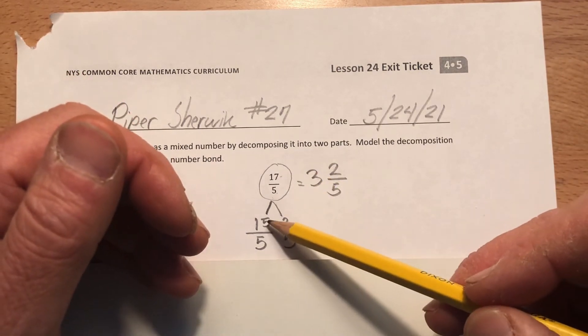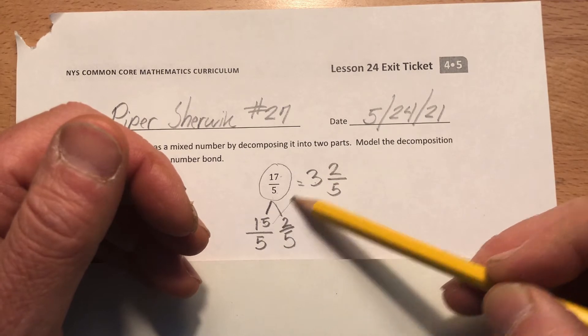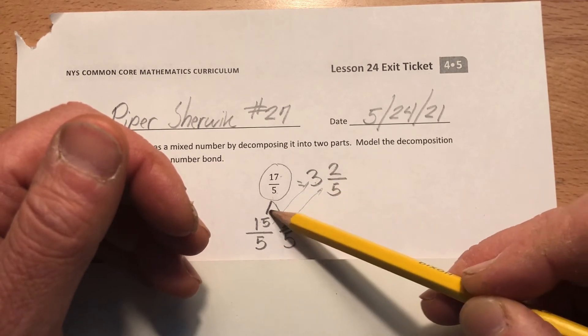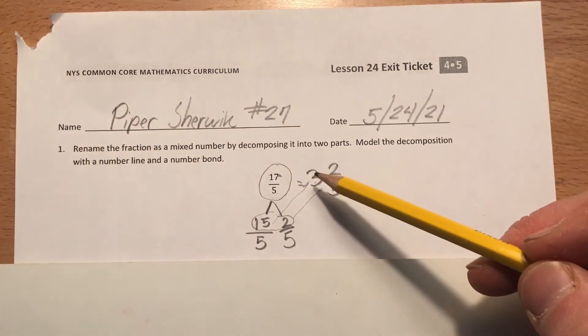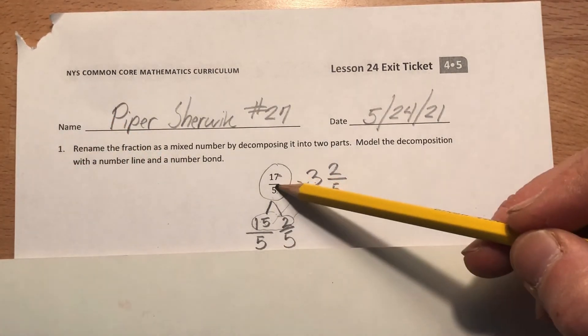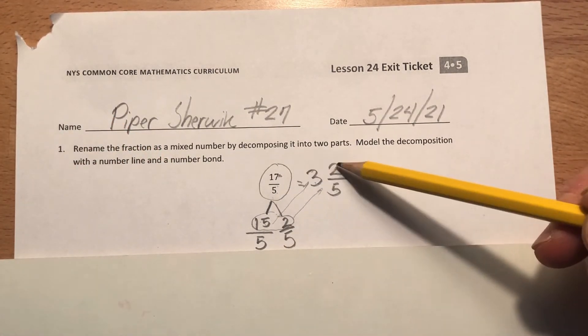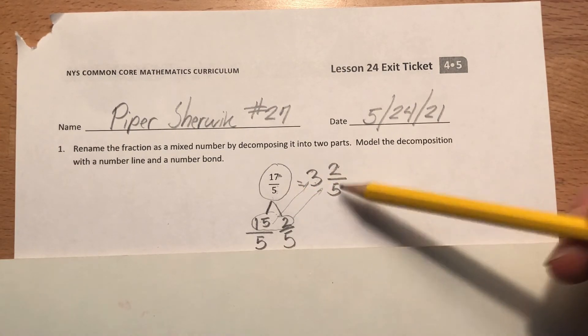So I decompose this into 15 fifths, which is exactly three, right? And I had two fifths left over. You see how 15 and two make 17? So it's three and two fifths. Five goes into 17, three full times with two left over and fifths remain the same.